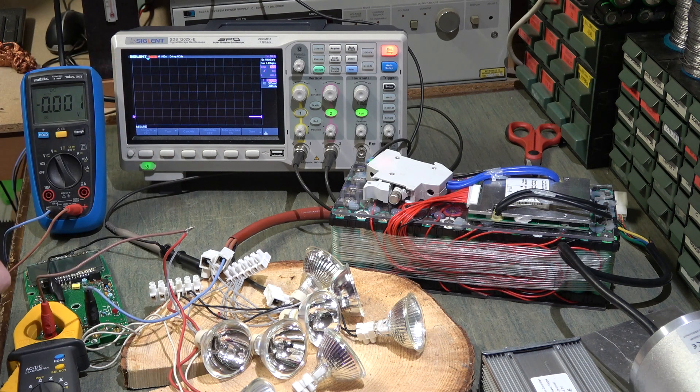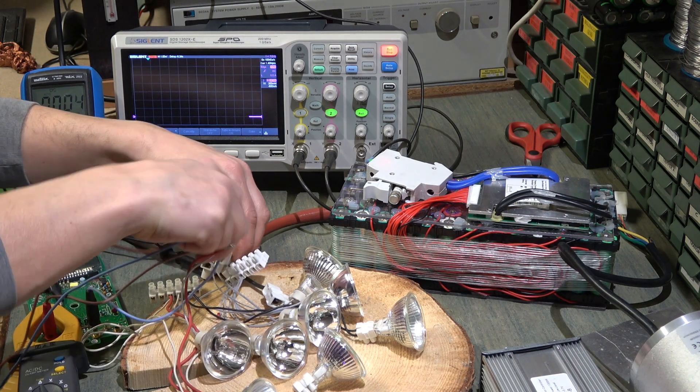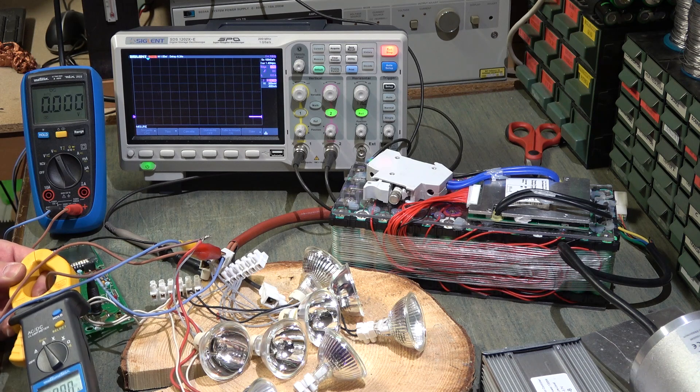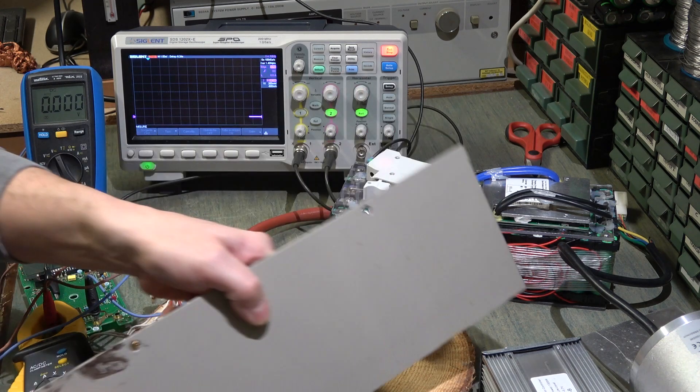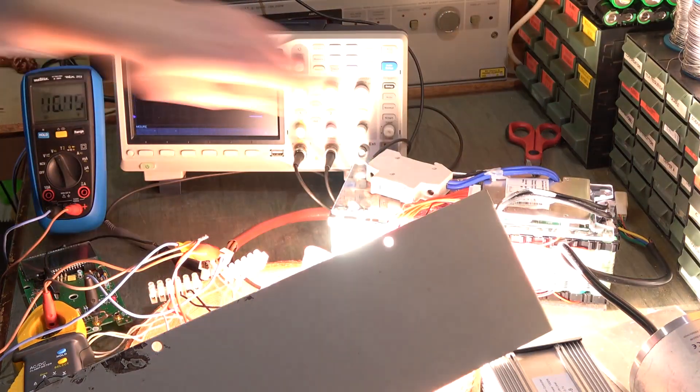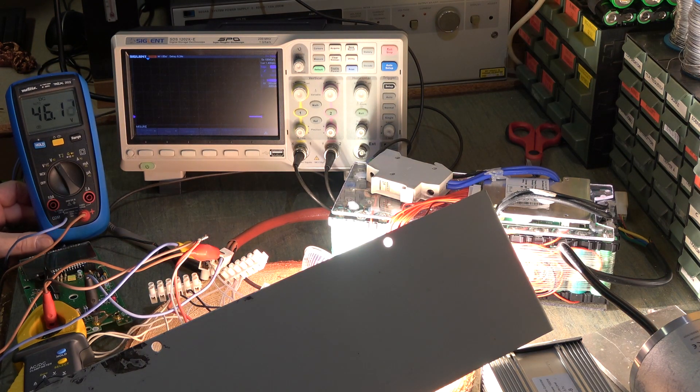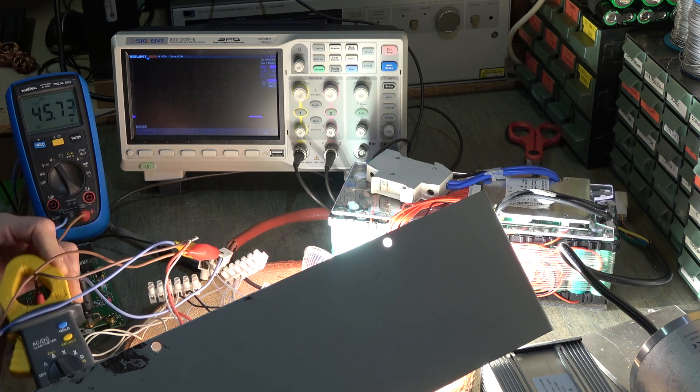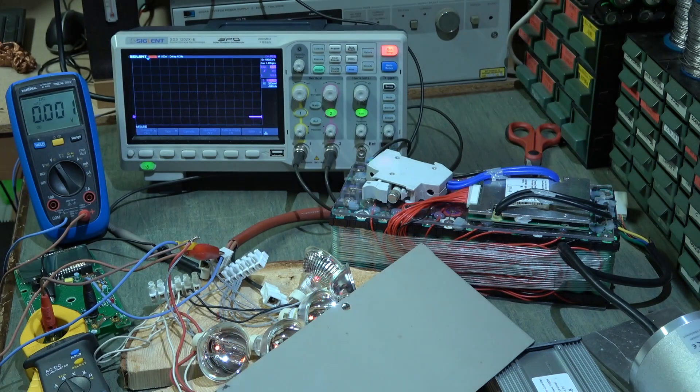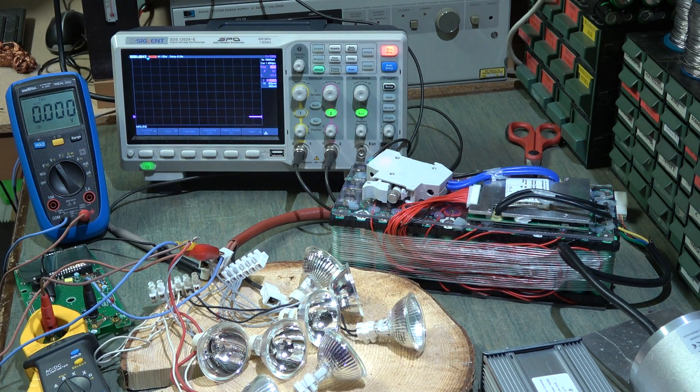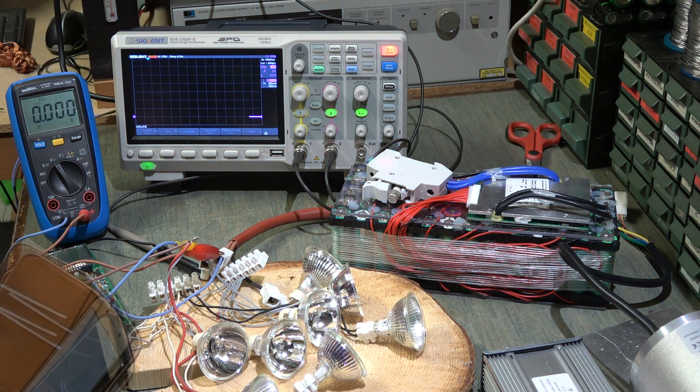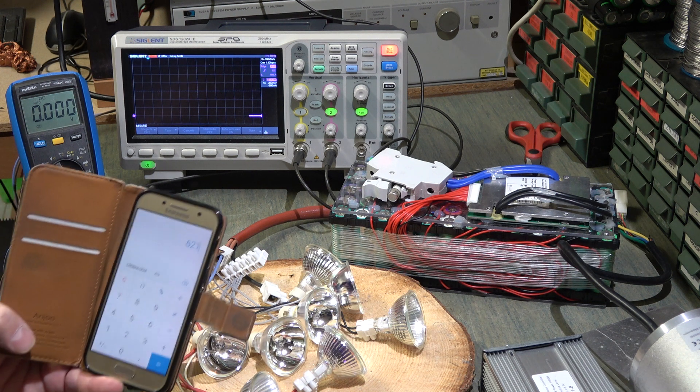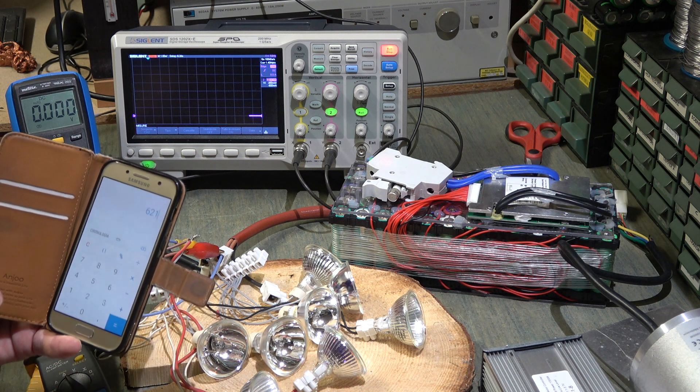Ora misuriamo anche la tensione. Mettiamo ancora il nostro coperchio e vediamo 46 volt. 46 volt con la pinza amperometrica che mi segna 13 ampere e mezzo. Evidentemente 13 ampere e mezzo per 46 volt, facciamo il calcolo: 13,5 per 46 volt uguale 621 watt. Abbiamo attaccato un carico di 621 watt.